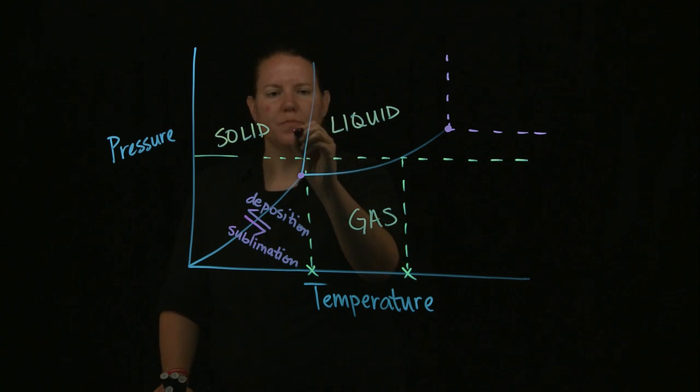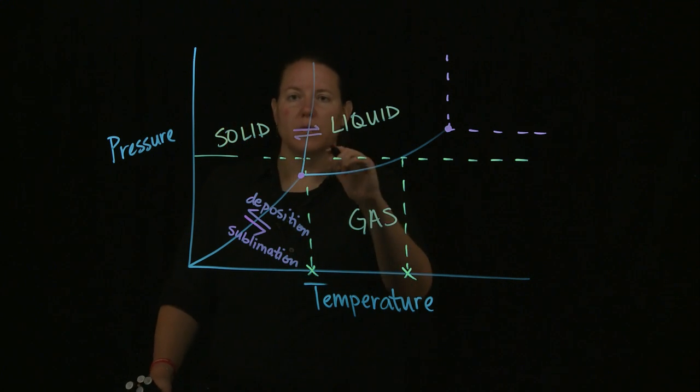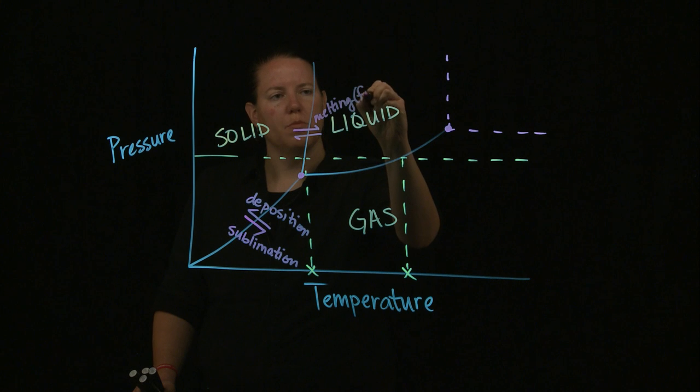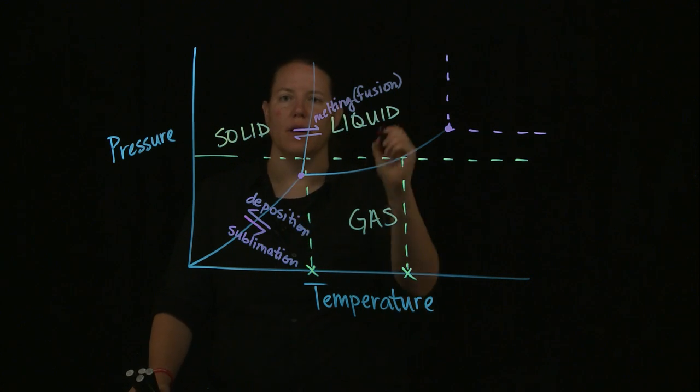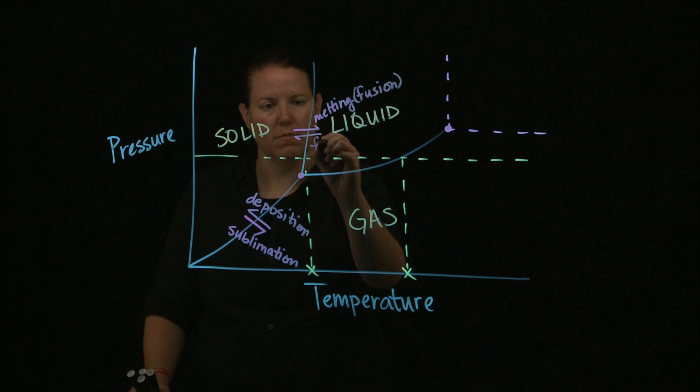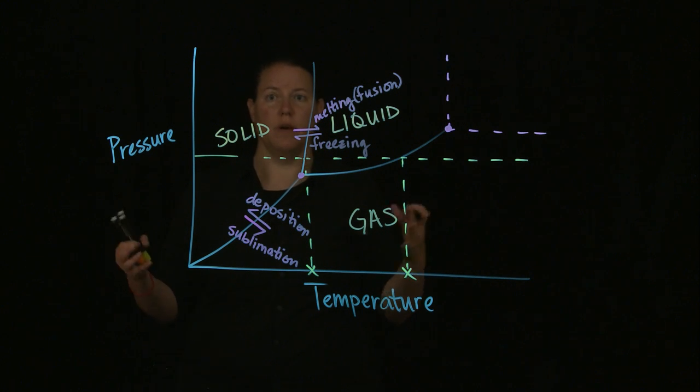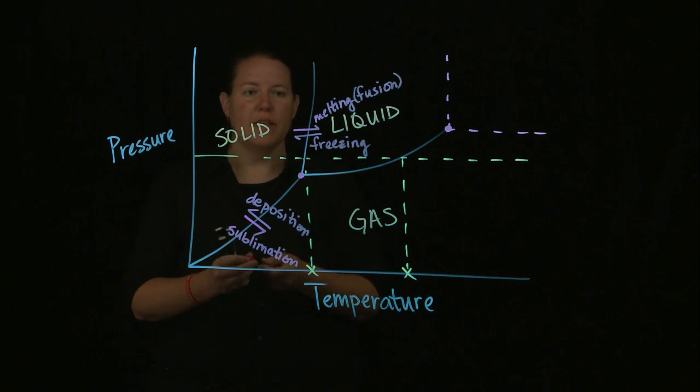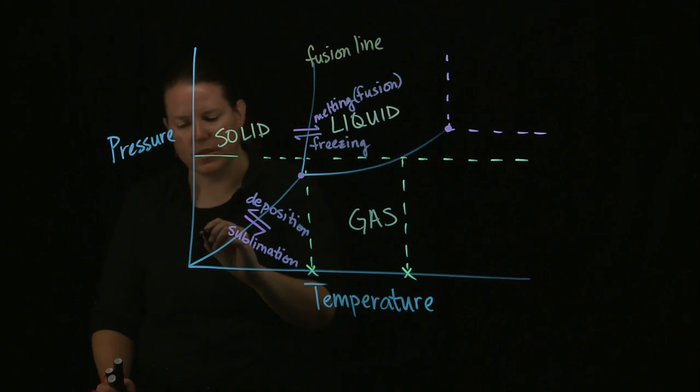This line right here is the boundary between the solid and the liquid. When a solid goes to a liquid, we call that process melting, which in your book they'll also call that a fancy-schmancy name, which is fusion. And liquid to solid, you would have the process of freezing. You're going to make water into a solid - you put it in ice cube dishes and put it in the freezer, which is an appropriately named contraption. This line is often called the fusion line.